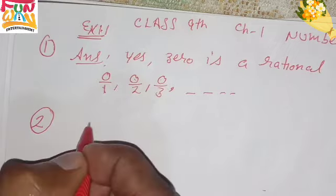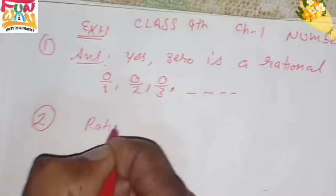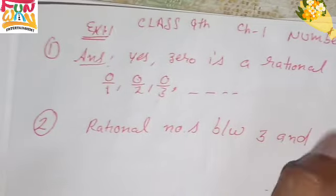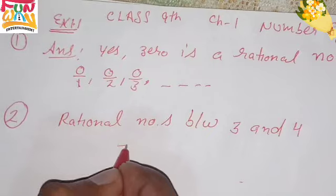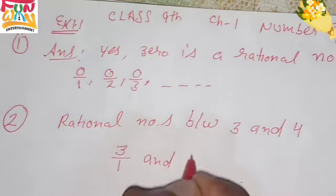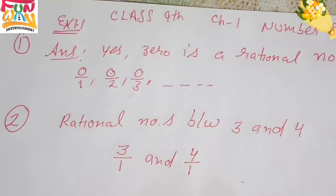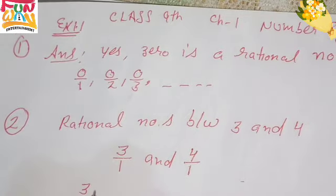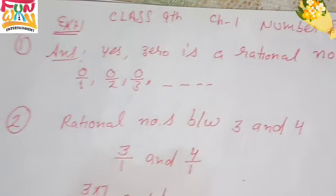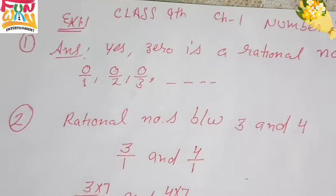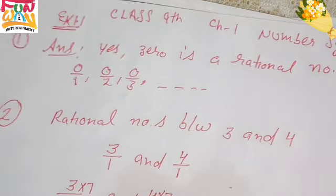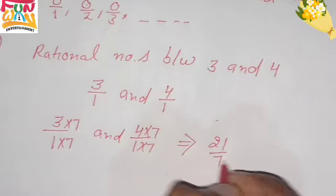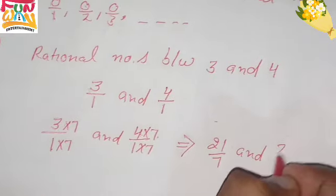Question 2: We have to find rational numbers between 3 and 4. We write 3 as 3 over 1 and 4 as 4 over 1. To find the numbers, we multiply both by 7. So 3 over 1 becomes 21 over 7, and 4 times 7 is 28 over 7. The denominators are now the same.